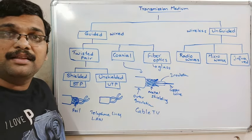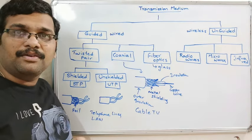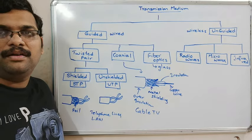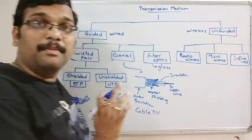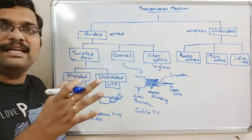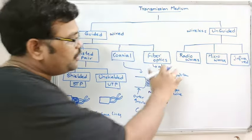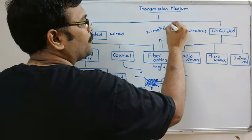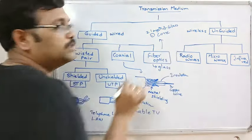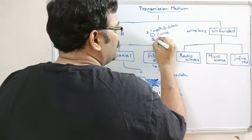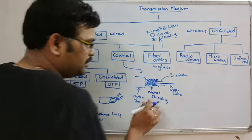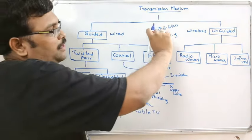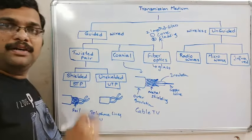Fiber optics is completely made of glass, used as a waveguide to transmit light signals. There are two layers of glass: the first one is called the core, which transmits the data, and the second one is the cladding — just like a shield — which surrounds the core. With the help of these two layers, data is transferred through the glass.